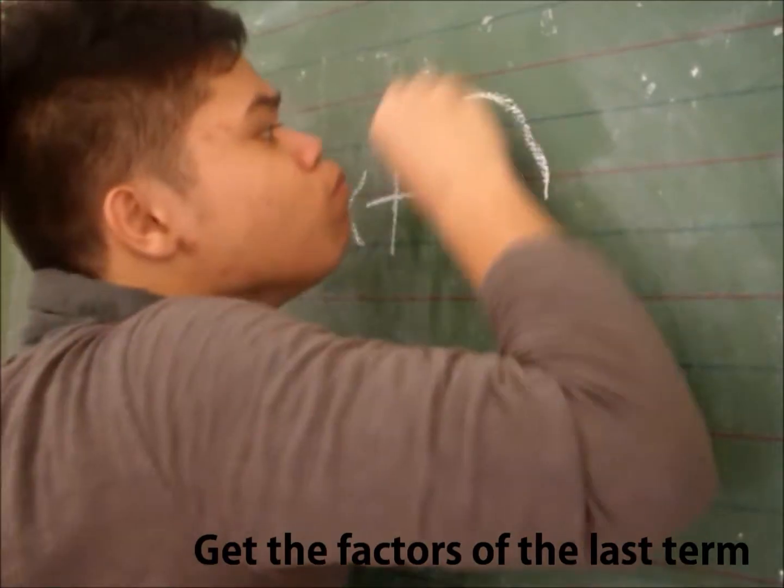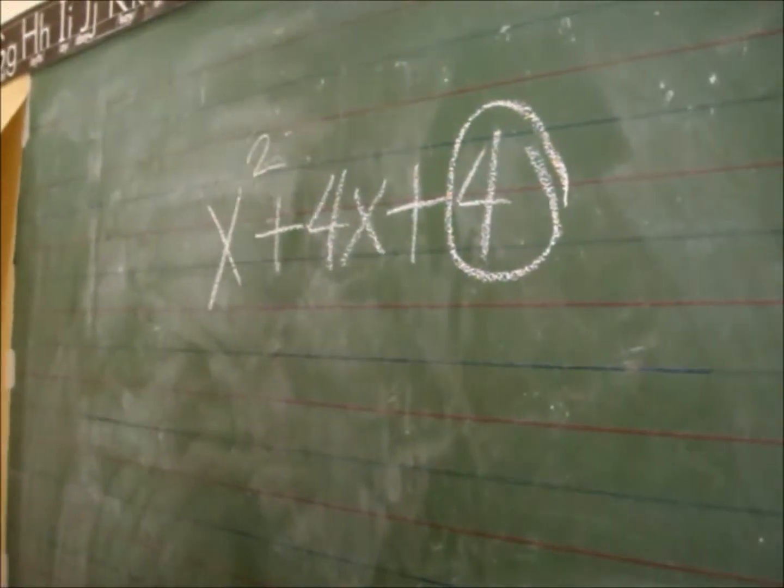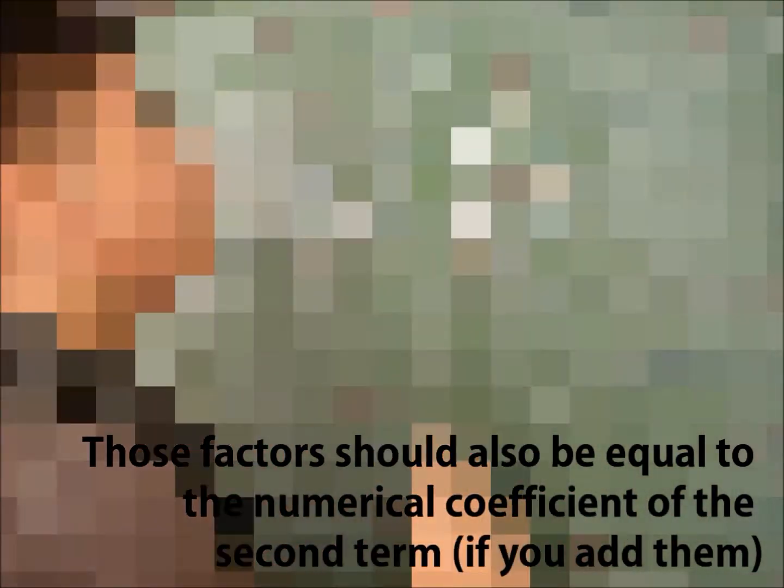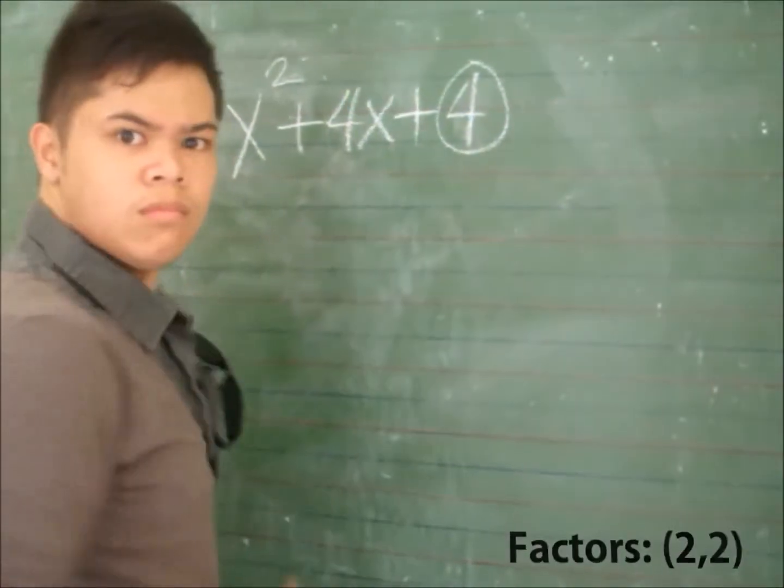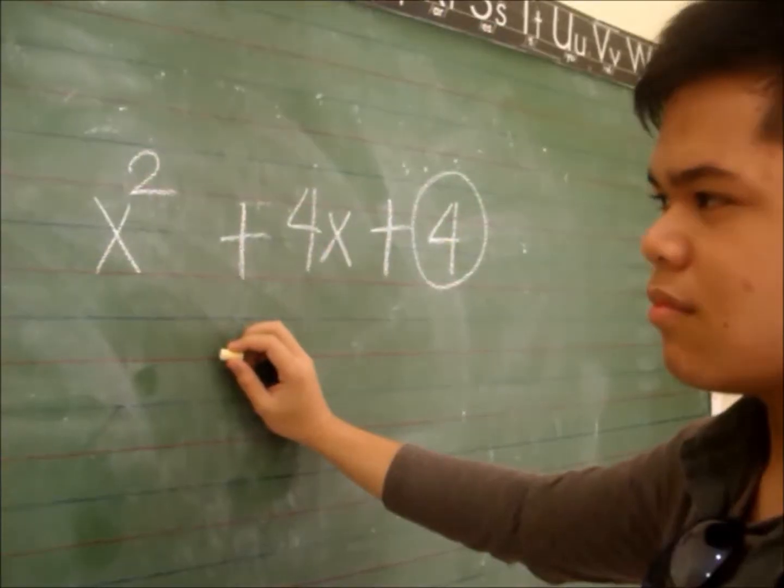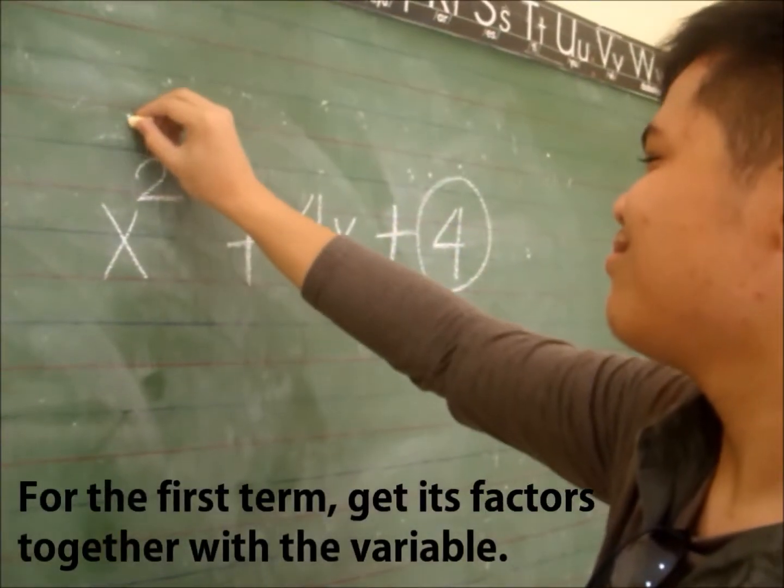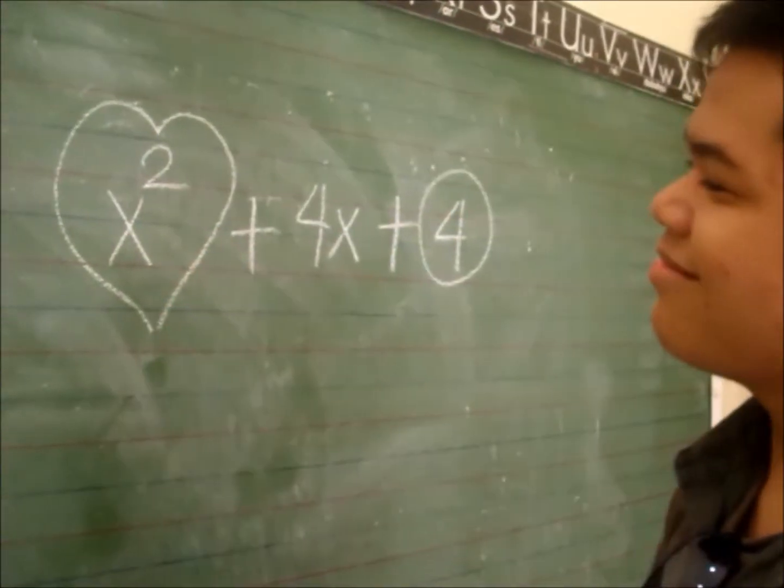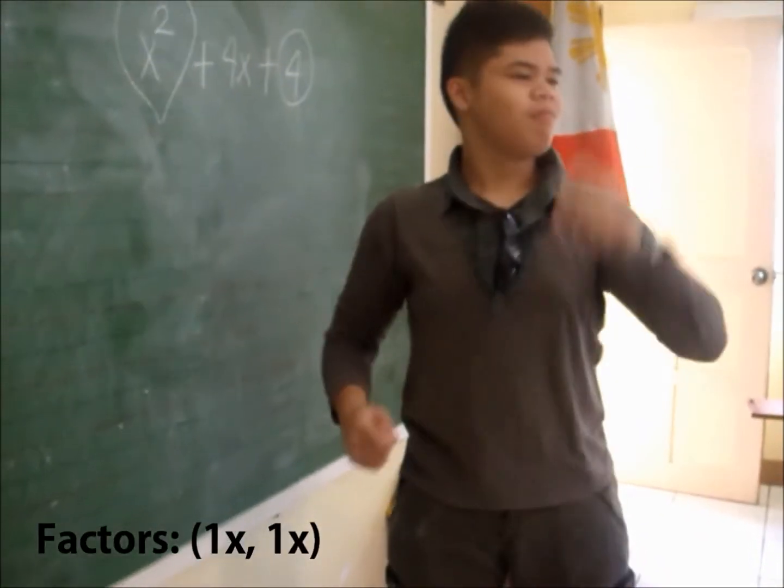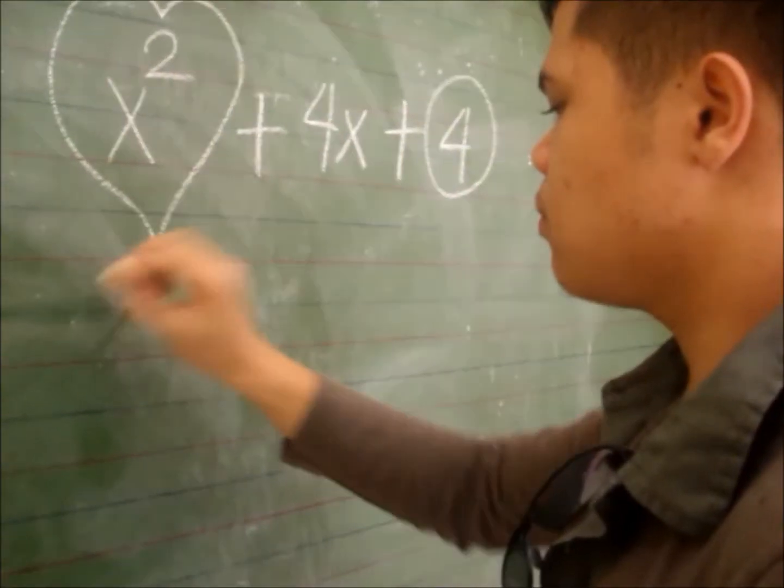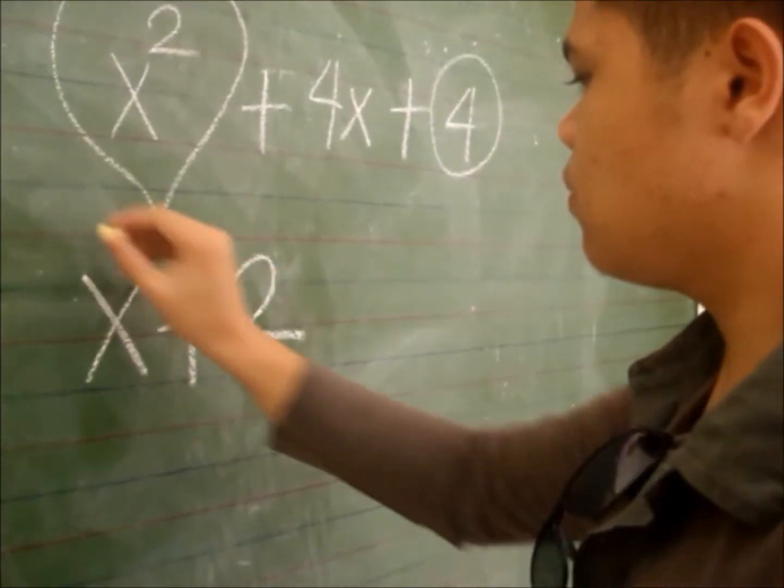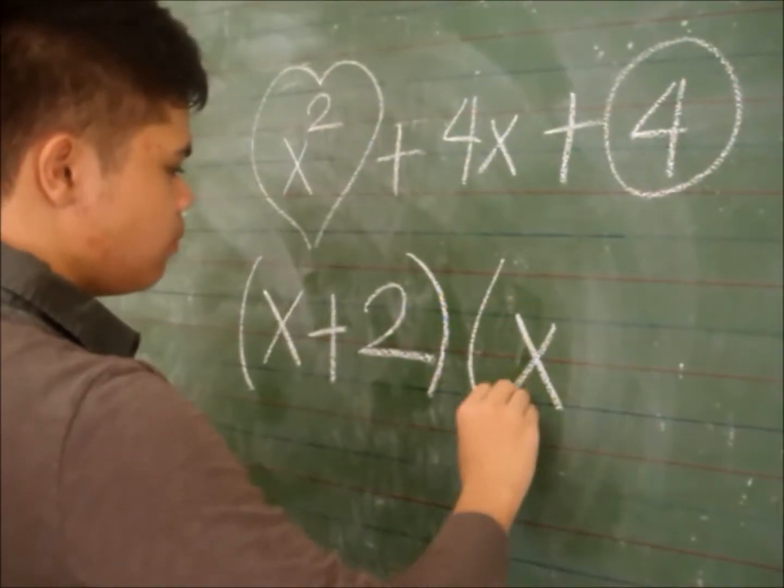Get the factors of the last term. Those factors should also be equal to the numerical coefficient of the second term: 2 and 2. For the first term, get its factors together with the variables: 1X and 1X. The quantity of X plus 2 multiplied to the quantity of X plus 2.